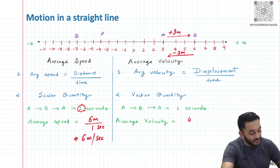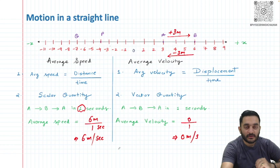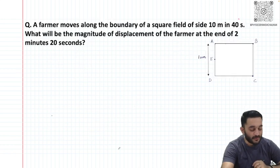So my displacement is going to become 0, that means if I calculate the average velocity, it is going to be 0 meters per second.